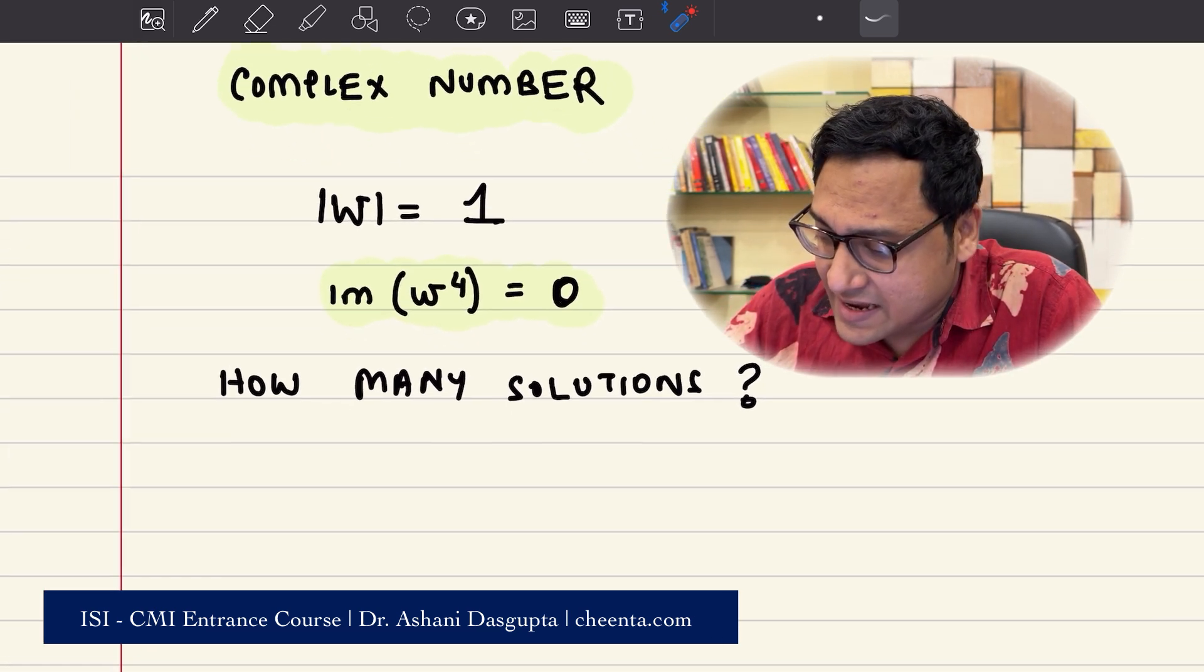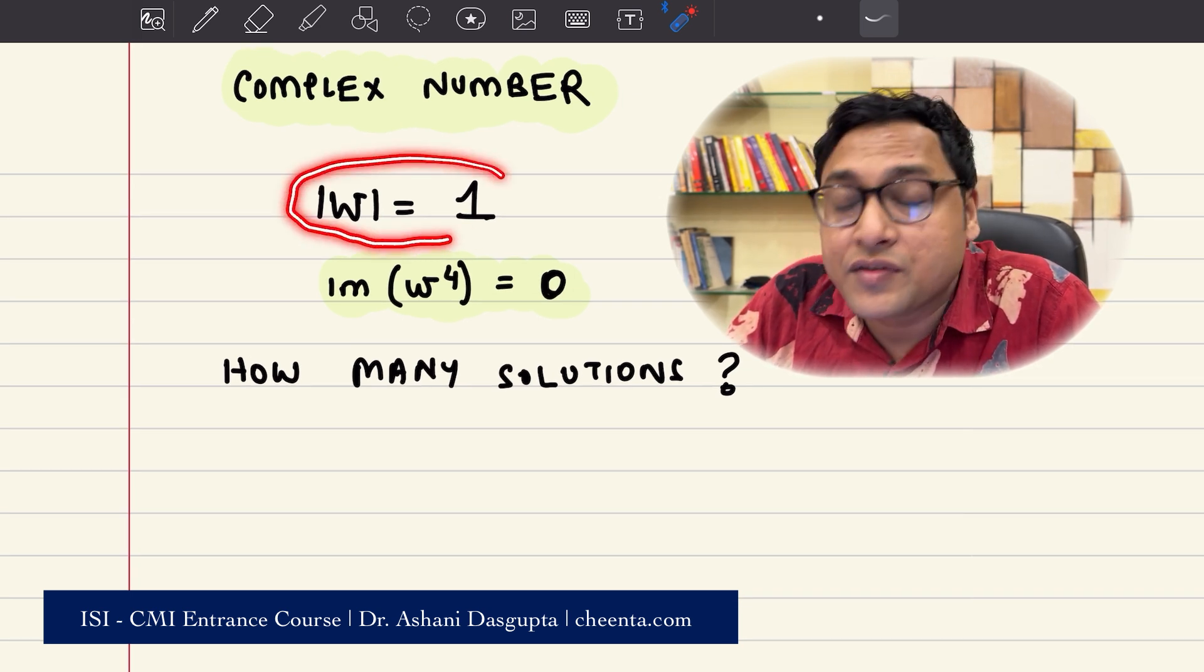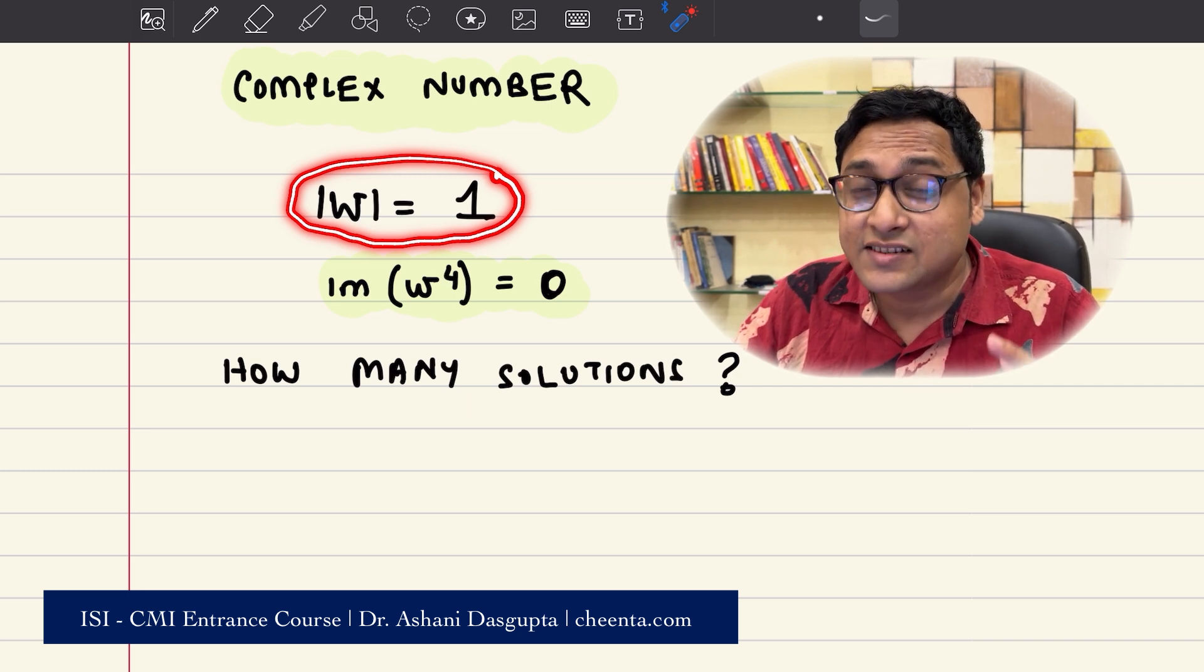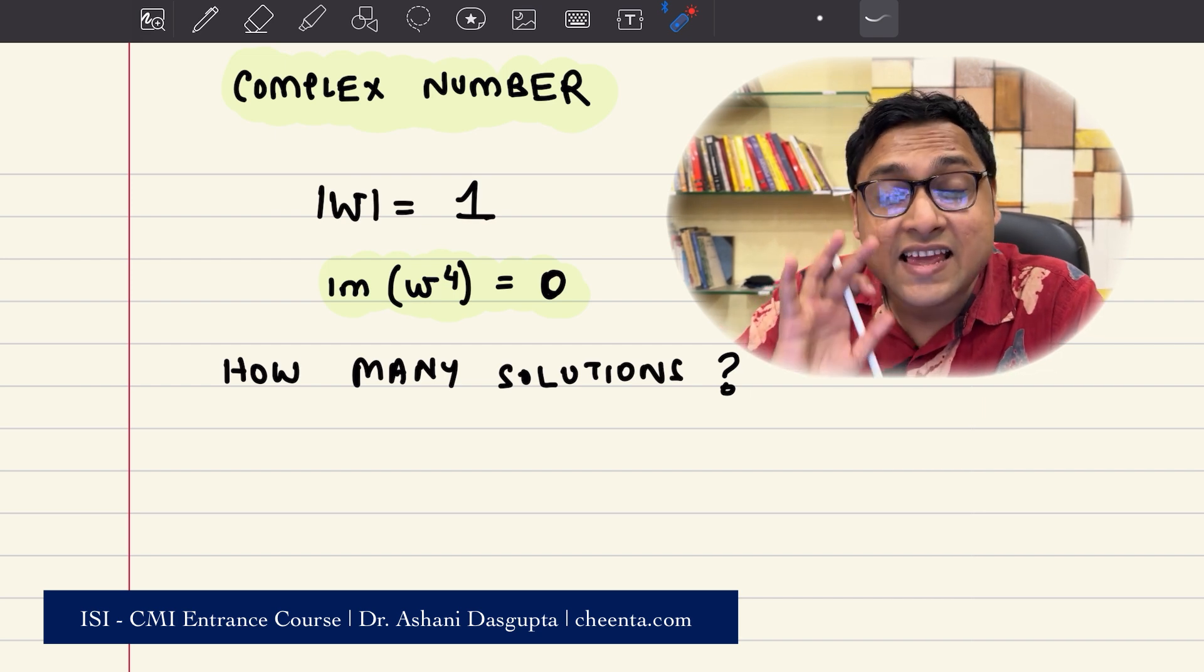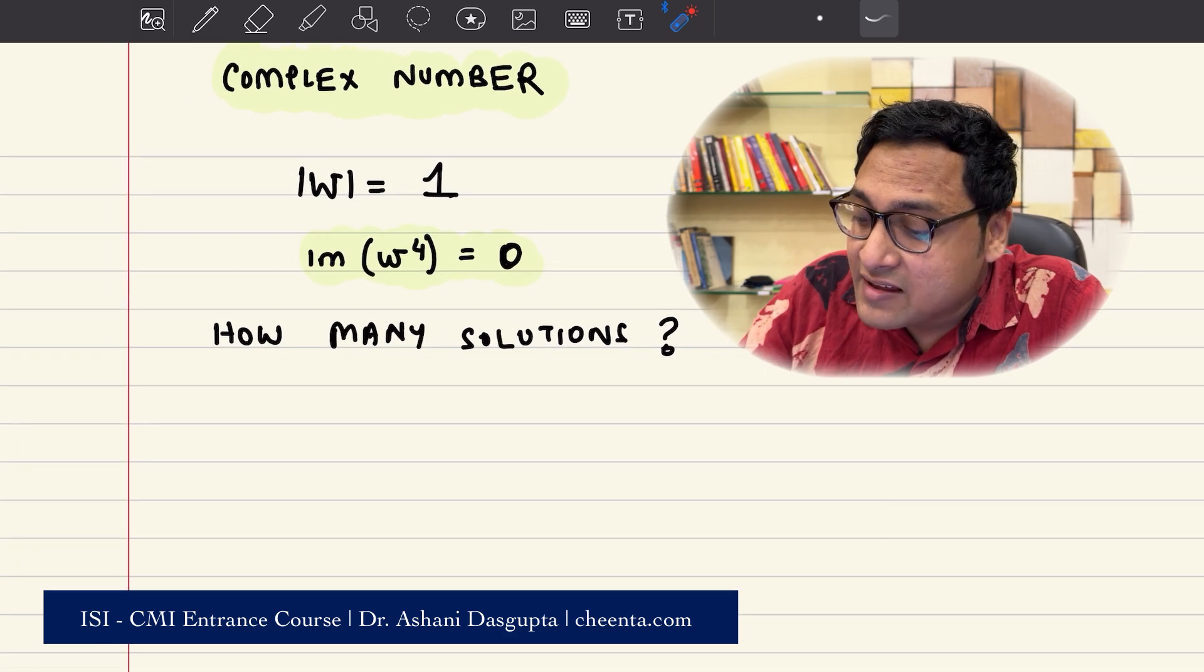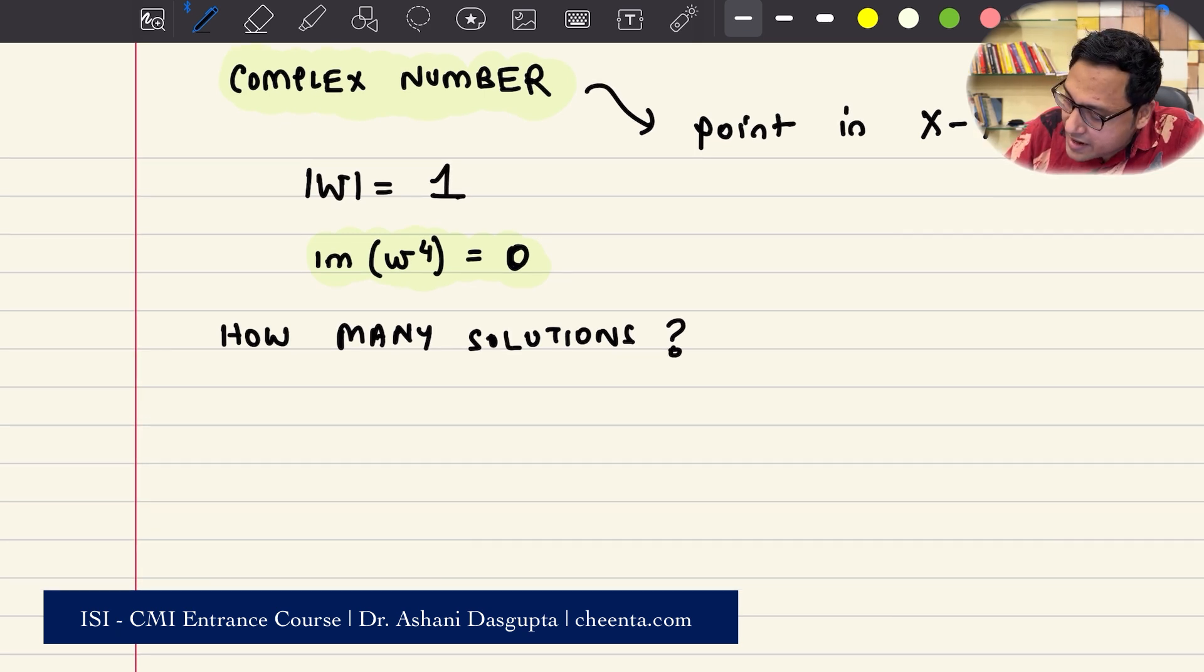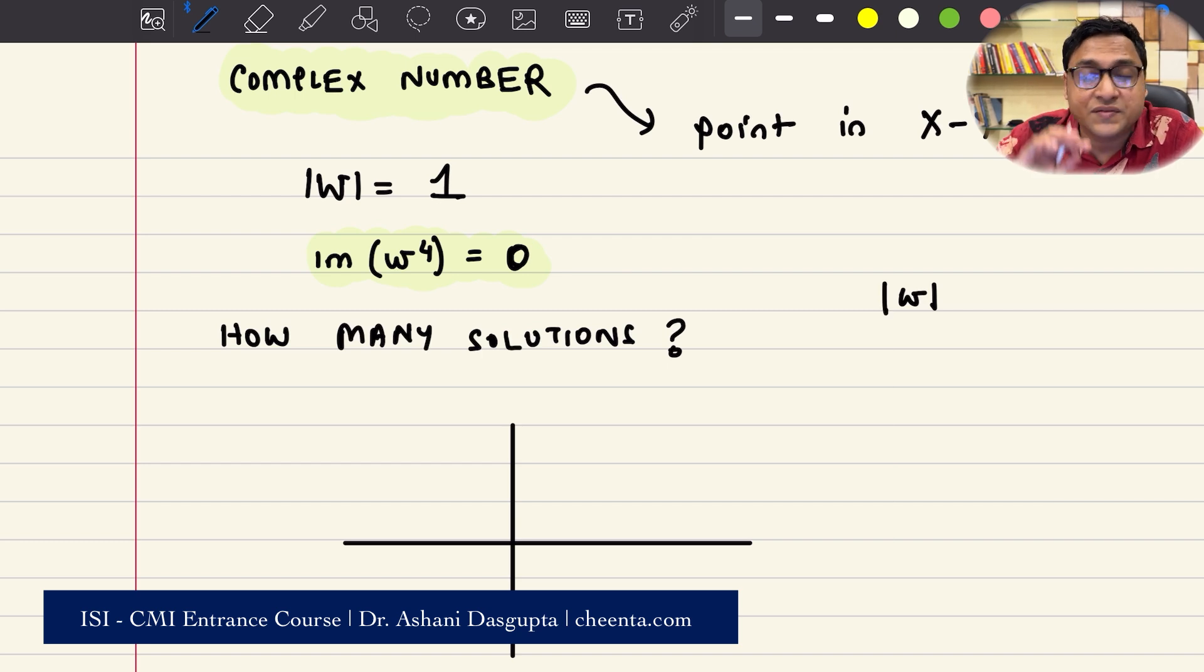The first condition is saying that the absolute value of the complex number is 1. I will encourage you to think about this geometrically. It's always easier to do it in the case of complex numbers. Think using geometry. Every complex number is nothing but a point in the XY plane. Sometimes it's also called the argand plane. If you want to understand geometrically what is absolute value of a complex number, it's very simple. It's the distance of the complex number omega from the origin.